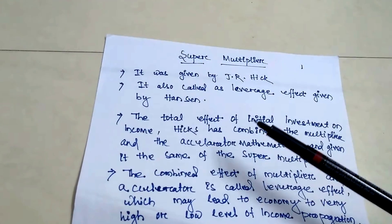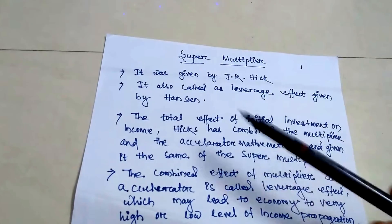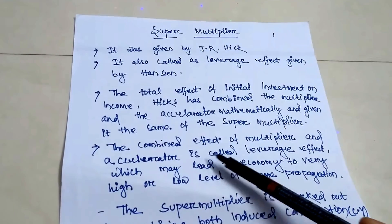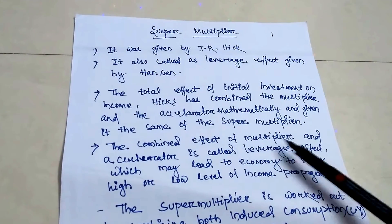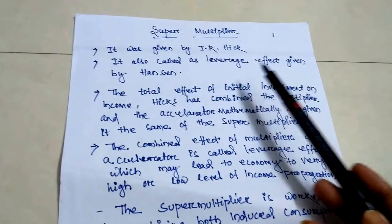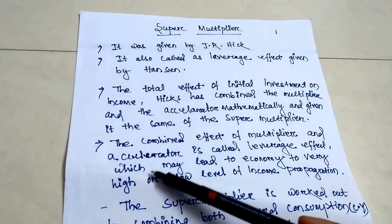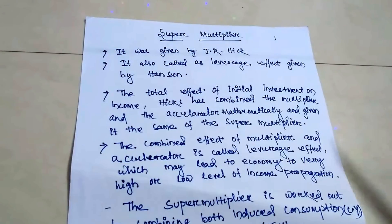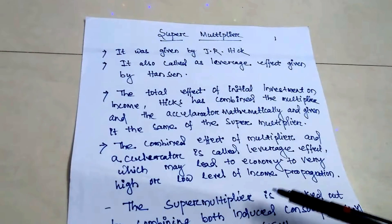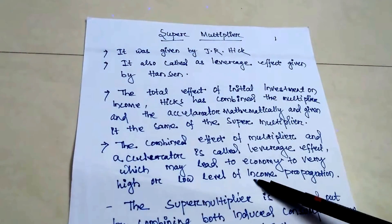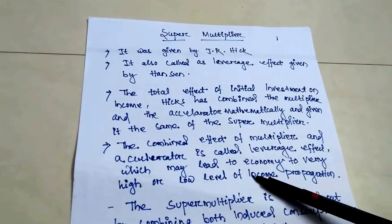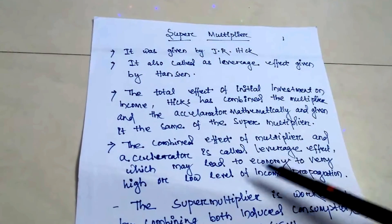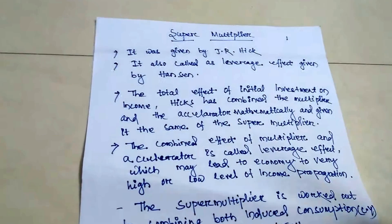Hicks combined the multiplier and accelerator mathematically and named it the super multiplier. The combined effect of multiplier and accelerator is called the Labrace Effect, given by Hansen, which may lead the economy to a very high or a very low level of income propagation. Hansen called it the Labrace Effect because the economy may grow very high or depress very low.